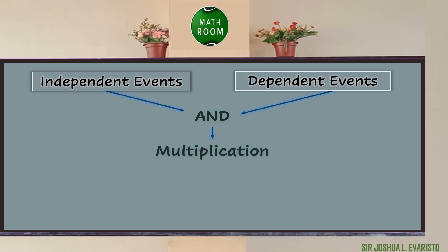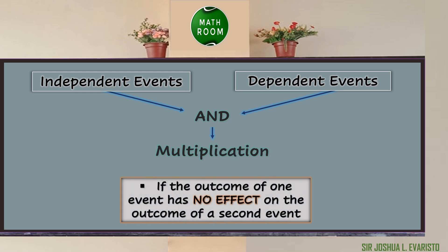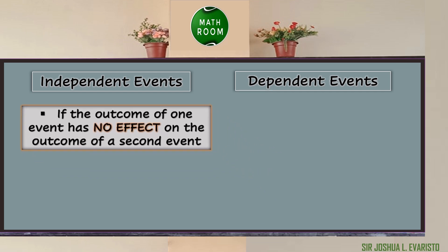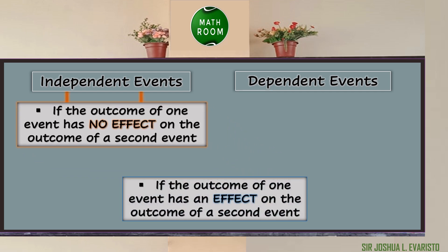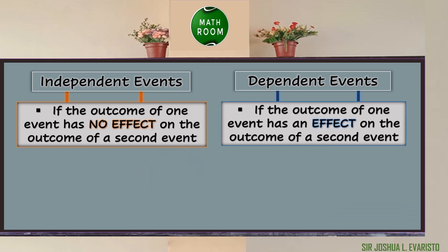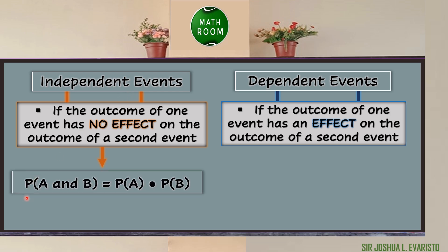Thus the operation we are going to apply is multiplication. If the outcome of one event has no effect on the outcome of a second event, then the two events are called independent events. If two events A and B are independent, then the probability of both events occurring is the product of the probability of A and the probability of B. In symbol: P(A and B) = P(A) × P(B).